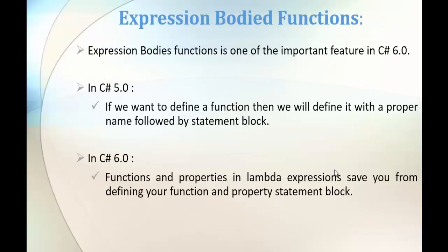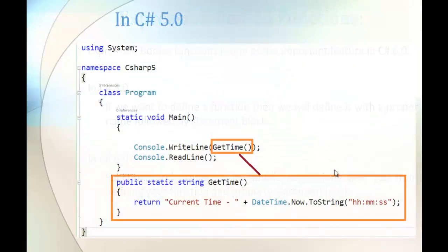Expression-bodied function is one of the key features present in C# version 6. In C# version 5, if you want to define a function, we define it with a proper name followed by a statement block, and within that block we write the logic. In C# version 6, that has been reduced with the help of lambda expression.